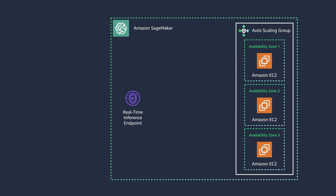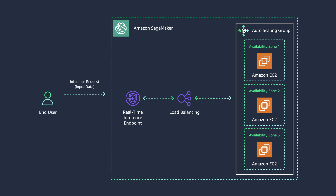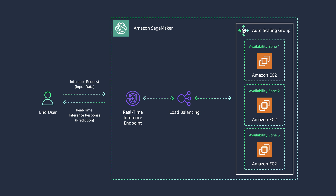This endpoint is fully managed and supports auto-scaling. As a best practice, make sure the instance size can handle the expected heavy traffic and latency requirements. End users will send an inference request and invoke the model for prediction. In response, the model will generate a prediction and send it back in real-time to the end user.